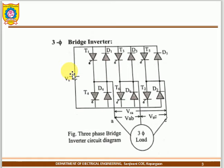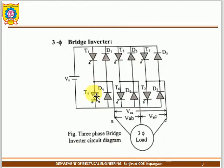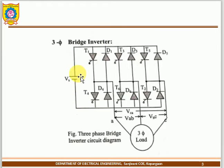Coming back to the three-phase inverter — you will learn 180-degree and 120-degree mode conduction. An inverter converts DC to AC. The AC load can be a three-phase induction motor or a three-phase resistive load. The inverter has three legs, and each leg has two switches connected to it, giving a total of six thyristors.